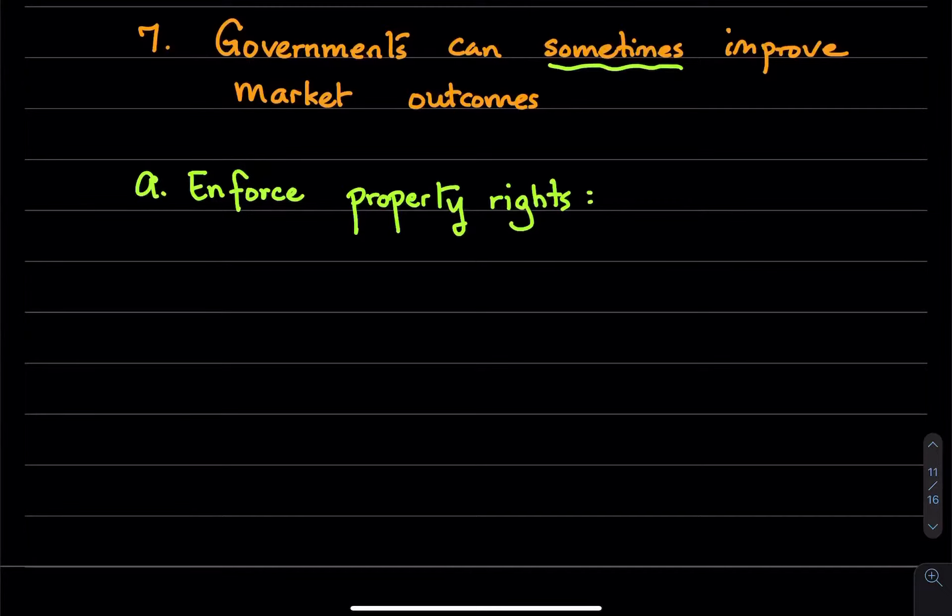Coming back to the question of why do we need the government, one reason we need the government is that the government is able to enforce property rights, which means that it allows the invisible hand to work by maintaining the institutions that are key to a market economy.